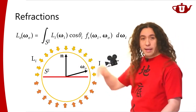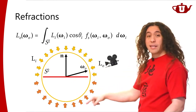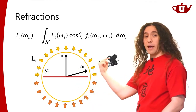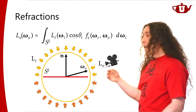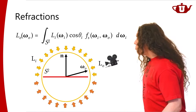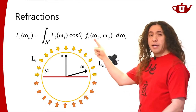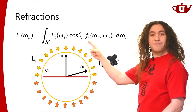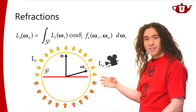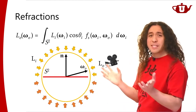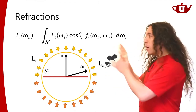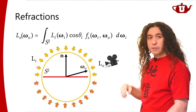We change the integration domain from a hemisphere to S², indicating the full sphere surface. Light can come from anywhere — if it's coming from inside the surface, that's a refraction; if it's coming from above, that's a reflection. We also change from FR (the reflection BRDF) to FS — the BSDF, the Bi-Directional Scattering Distribution Function — because refractions involve all sorts of surface scattering. This is the complete form of the rendering/shading equation.